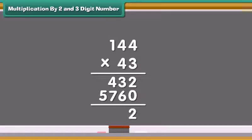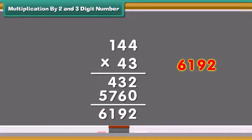Now, add the 2 values. We get 6192. So, 144 multiplied by 43 is 6192.